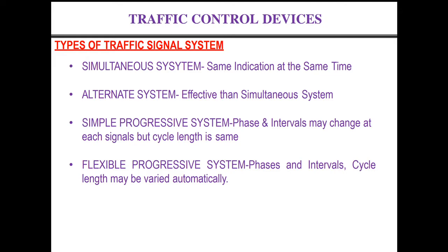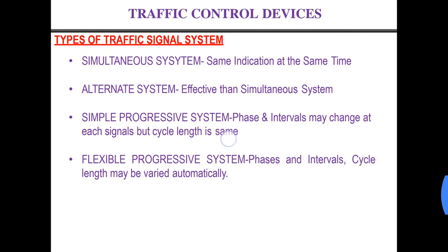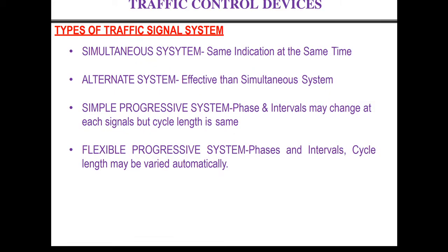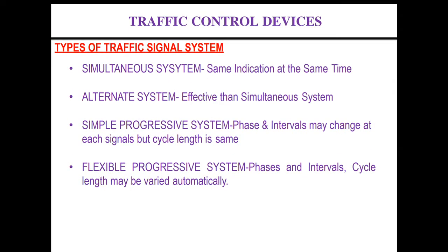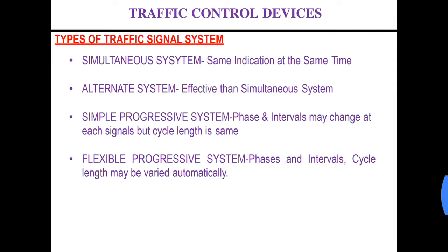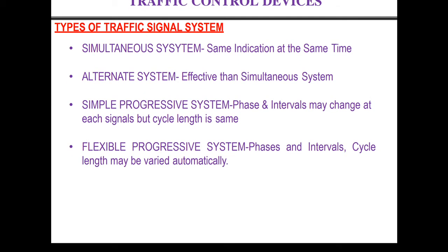Now, types of traffic signal systems. The first one is the simultaneous system, in which the same indication is given at the same time. There might be a road joining point A and point B with a number of intersections in between. If all these intersections display the same phase — maybe red or green — at the exact same time, then that is known as the simultaneous system.